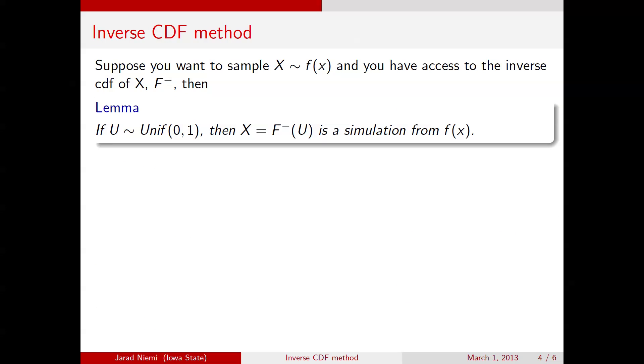Okay, so how are we going to use this? All right, so this is the main result. If we want to sample from f, and we have access to its inverse CDF, capital F minus, then all we need to do is generate a random uniform, call it u, and evaluate the function F inverse of u, and that will be a simulation from the distribution of interest.